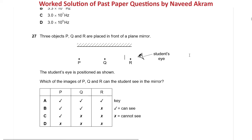The first question is from October/November 2020 Paper 1 Variant 1, question number 27. Three objects P, Q and R are placed in front of a plane mirror. The student's eye is positioned as shown. Which of the images of P, Q and R can the student see in the mirror?